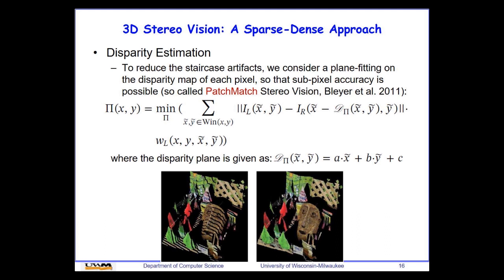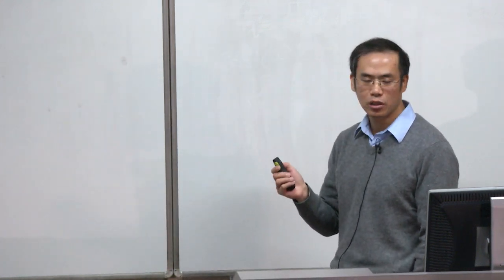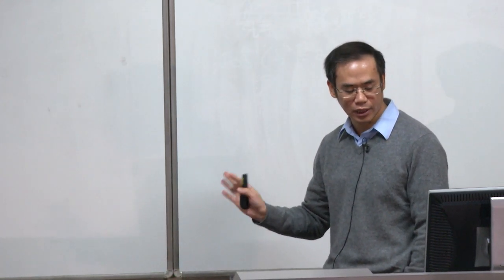In addition to the weighting, we use a patch-match technique to fix the staircase problem. When capturing a 3D object, depth is quantized into discrete slices from nearest to farthest, creating staircase artifacts. The patch-match technique fixes this artifact, resulting in much smoother 3D surface models.